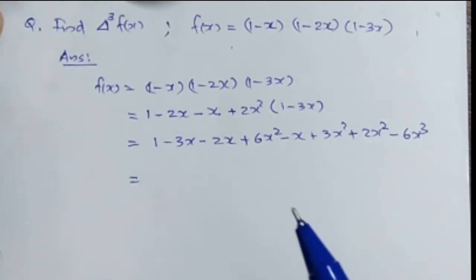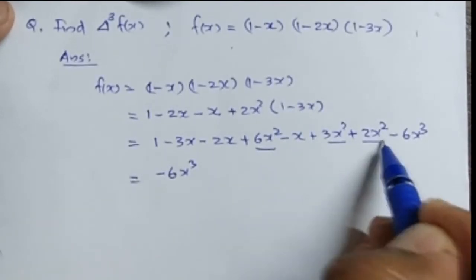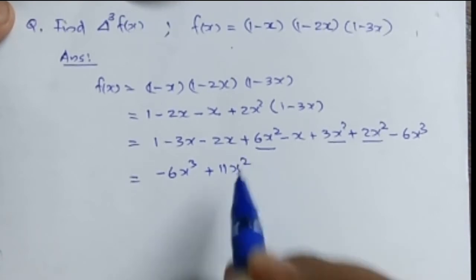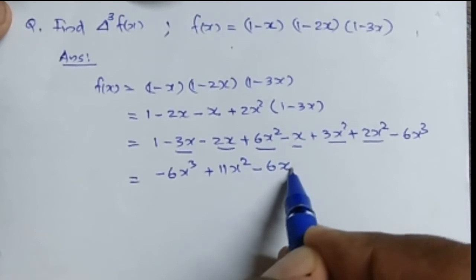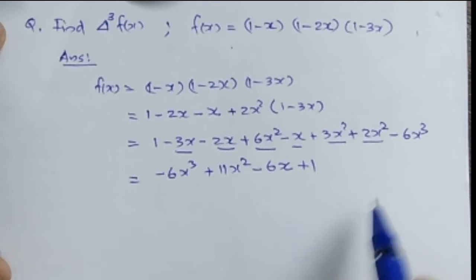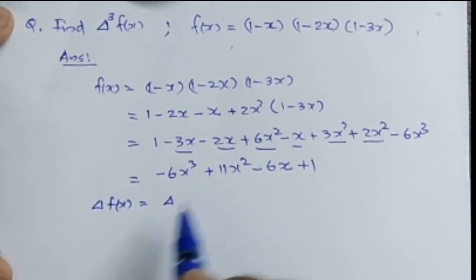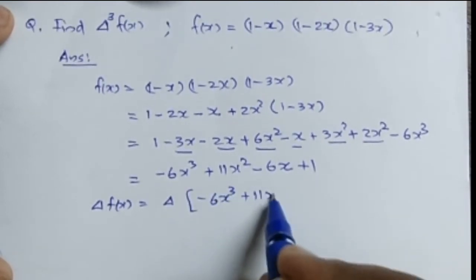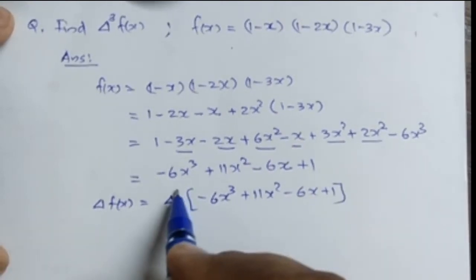Rearranging, we get f(x) = -6x³ + 11x² - 6x + 1. We need to find the third forward difference, delta³ of (-6x³ + 11x² - 6x + 1).